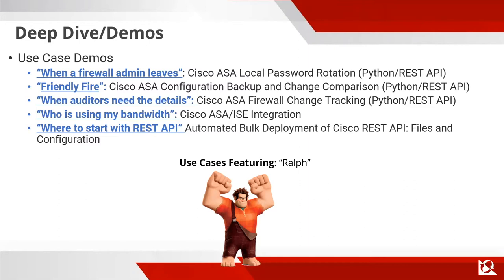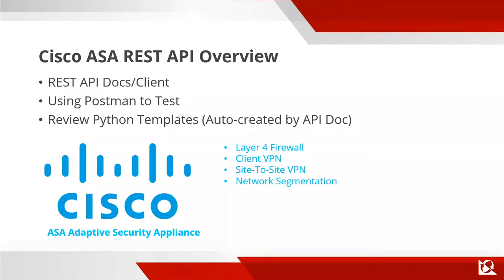Even though it seems like the obvious first choice, I'm going to talk about where to start with REST APIs last, because once you see all the use cases and understand what's possible, then you can take action. Quick overview: Cisco ASA REST API — the ASA is the Cisco Adaptive Security Appliance, typically a Layer 4 firewall used for client VPN or site-to-site VPN, sometimes used for network segmentation.